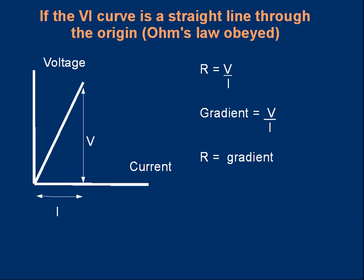Sometimes it might be convenient to reverse the axes, putting voltage on the y-axis and current on the x-axis. That's not the conventional way, but if you do, note that the gradient of the straight line is V over I. Since resistance equals V over I, in this case the resistance equals the gradient directly, and the gradient would have units of ohms.